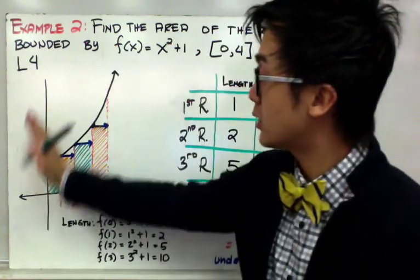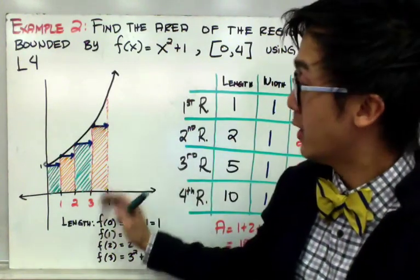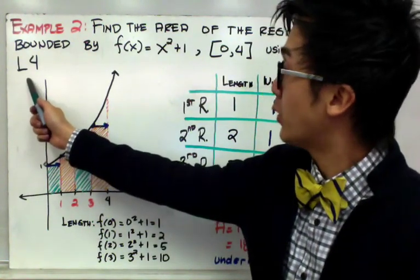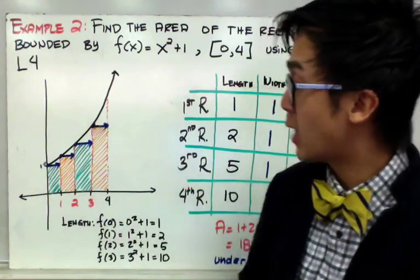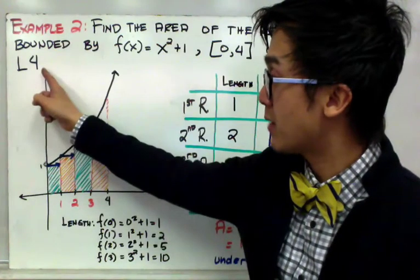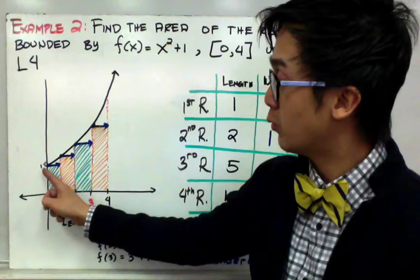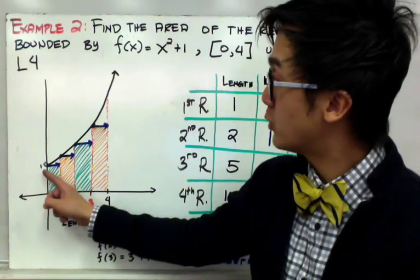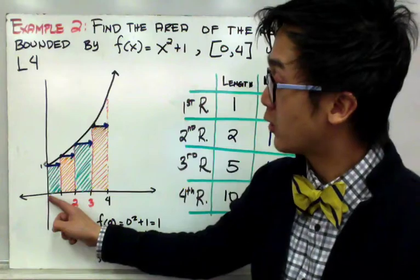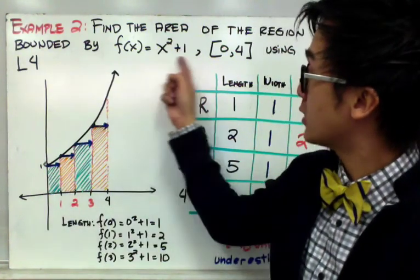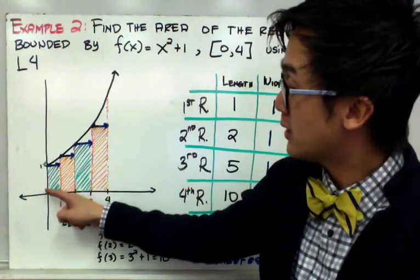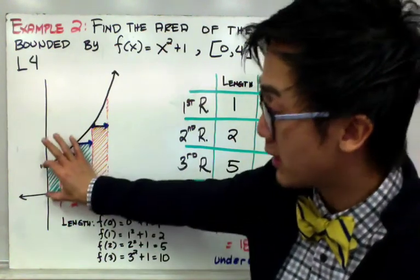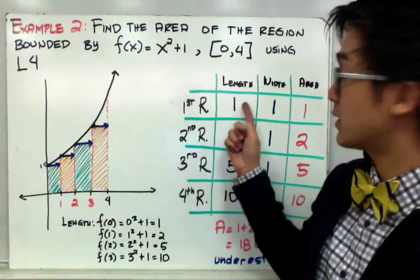Here is my illustration of the Riemann sums method using the left-to-right method, with four rectangles. Since it's the left-to-right method, we start at the leftmost side of the area, which is at 0. To find the height of the first rectangle, we plug x = 0 into the function: f(0) = 0² + 1 = 1. So the height of the first rectangle is 1 unit.